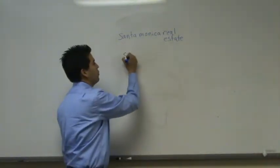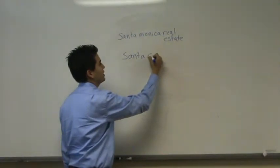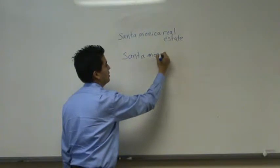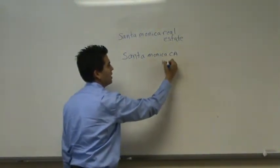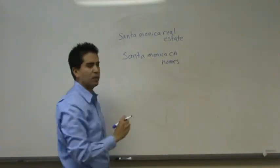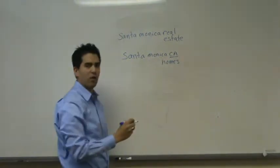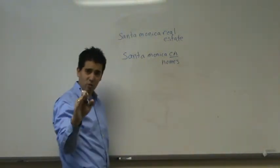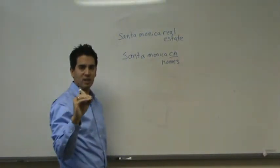So what if we added the state abbreviation? So that's Santa Monica, CA for the state, and then we add a property type — Santa Monica, CA homes. When you start to add this state qualifier, are less people going to search on that? Yes, but does it give you the opportunity to start capturing some people right away? Absolutely it does.